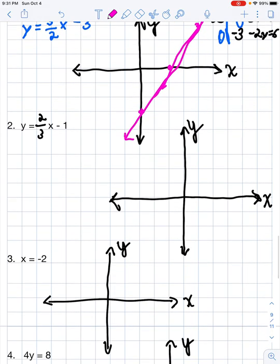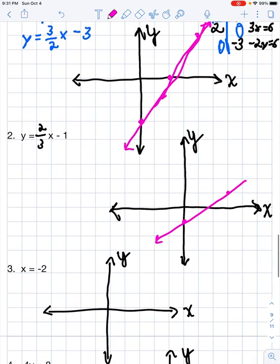The second line, y equals 2 thirds x minus 1, we're already in slope-intercept form, so it makes the most sense to use that form. We would start at our y-intercept of negative 1, we'd go up 2, right 3, and we could draw our line. That was a little better that time.